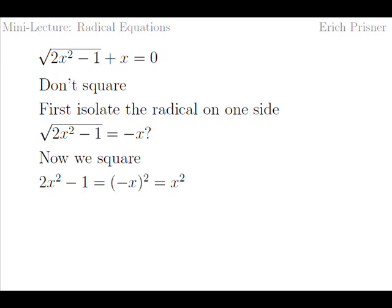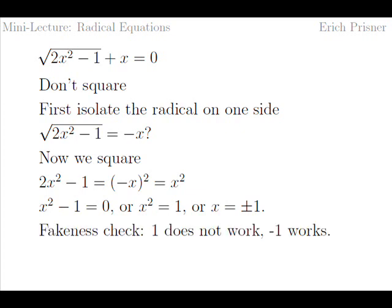This is a very simple quadratic equation — so simple that we don't even need the quadratic formula. We subtract x squared on both sides to get x squared minus one equals zero, or x squared equals one, or x equals plus or minus one. We get two solutions: one and negative one. But don't we have to check for fakeness? One does not seem to work, since square root of two times one minus one plus one equals two, not zero. Negative one, however, works. Square root of two times one minus one minus one equals zero. So one is a fake solution, and negative one is really a solution — the only one.